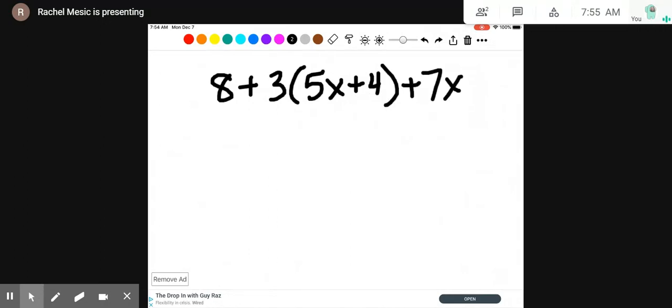For this one, again, we distribute first. But the distributive property is kind of located in the middle. So we're going to take this 3 that's kissing the parentheses and multiply it by each term inside the parentheses. 3 times 5x is 15x and 3 times 4 is 12.